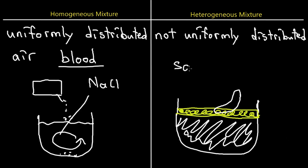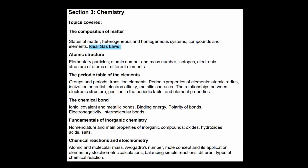Another example: if you add sand to water, the sand just sinks to the bottom and doesn't dissolve. A scoop from the top gives only water; a scoop from the bottom picks up sand. That contrasts with homogeneous examples like blood, air, or a salt water solution, where everything is mixed uniformly. This concludes our first lecture for today.